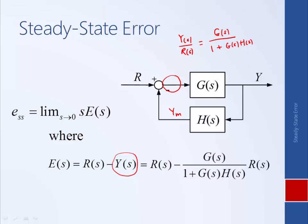Substituting that in for Y(s), we get an expression for E(s). One thing that we have to be a little bit careful of here when we're trying to determine the final value of the error is that, in some cases, the reference input could be going to infinity. For example, if our reference was a ramp.